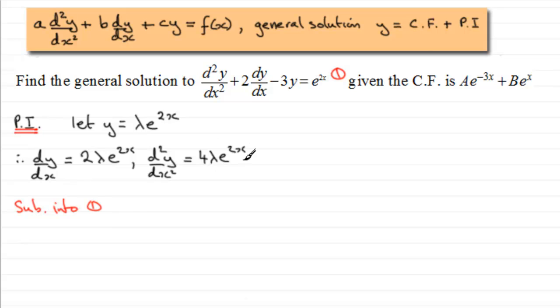If we do that for this example, d²y/dx squared is 4 lambda e to the power 2x. Then we've got 2 times dy/dx, so that's going to give me 4 lambda e to the power 2x. And then I've got minus 3y, so minus 3 lambda e to the power 2x. This equals e to the power 2x.